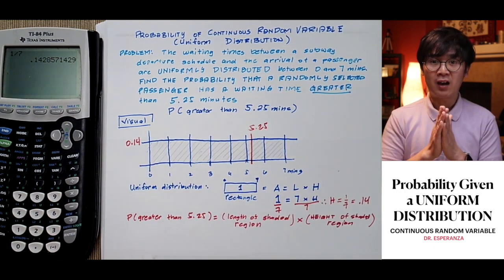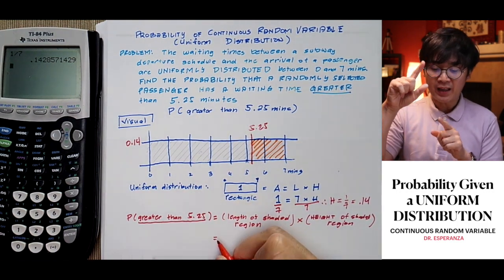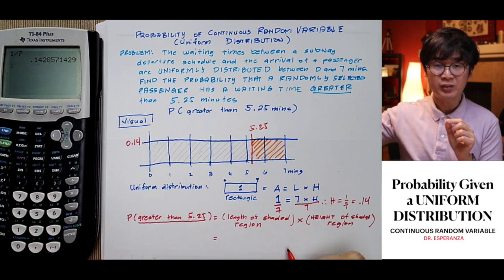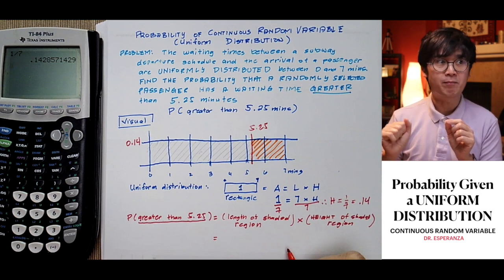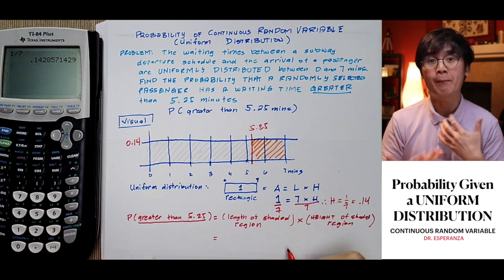is greater than 5.25. Since we have our visual, start at 5.25, then all the way to 7 minutes because it's greater than 5.25. Shade that region because that's the probability we're looking for.